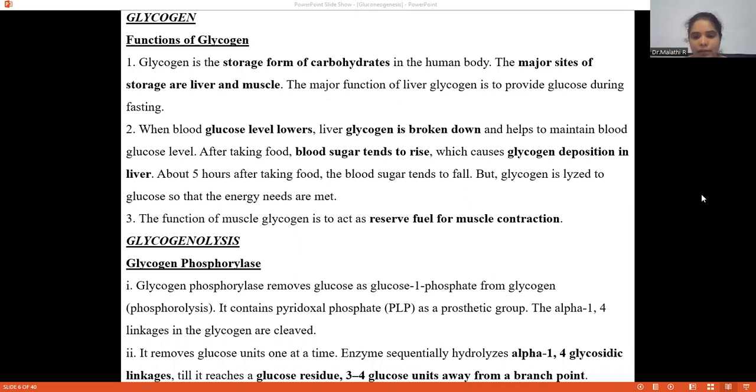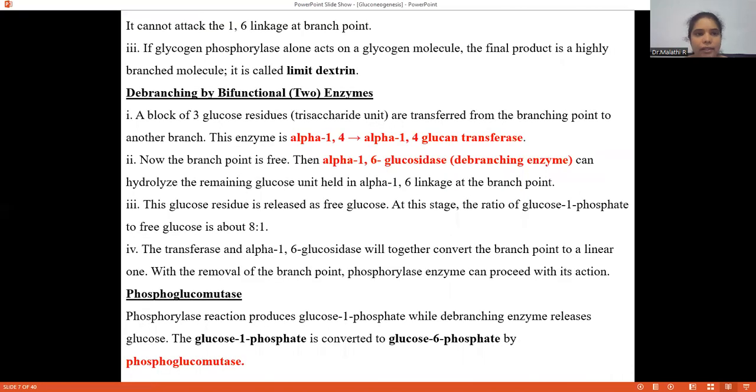It removes glucose units one at a time. The enzyme sequentially hydrolyzes alpha-1,4 glycosidic linkages till it reaches a glucose residue, the 4 glucose units which will be away from the branching point.